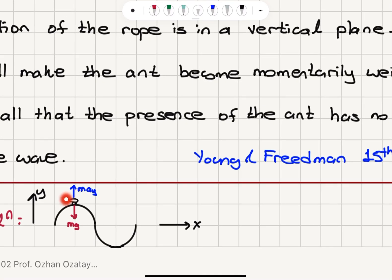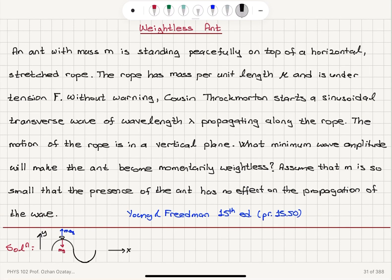Here is our ant sitting on top of this rope peacefully. As a sinusoidal wave starts traveling through the string, the ant will start making simple harmonic motion together with the string element that it is standing on. We have a sinusoidal wave with wave function y(x,t) = A sin(kx − ωt) traveling to the right. The propagation speed v is ω divided by k, angular frequency divided by wave number, which equals the square root of tension f divided by mu.